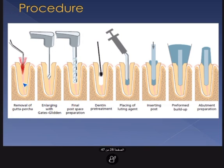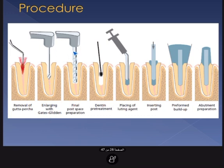For the procedure: you start with the endodontically treated tooth, remove the gutta-percha using a round bur, then use the Gates Glidden bur — which has a cutting part only at its tip — to prepare according to the predetermined length. After Gates Glidden preparation, increase the space using the Peeso reamer, which has more cutting surface. After post space preparation, you can also use the drill that comes with the post system to fit the space precisely.